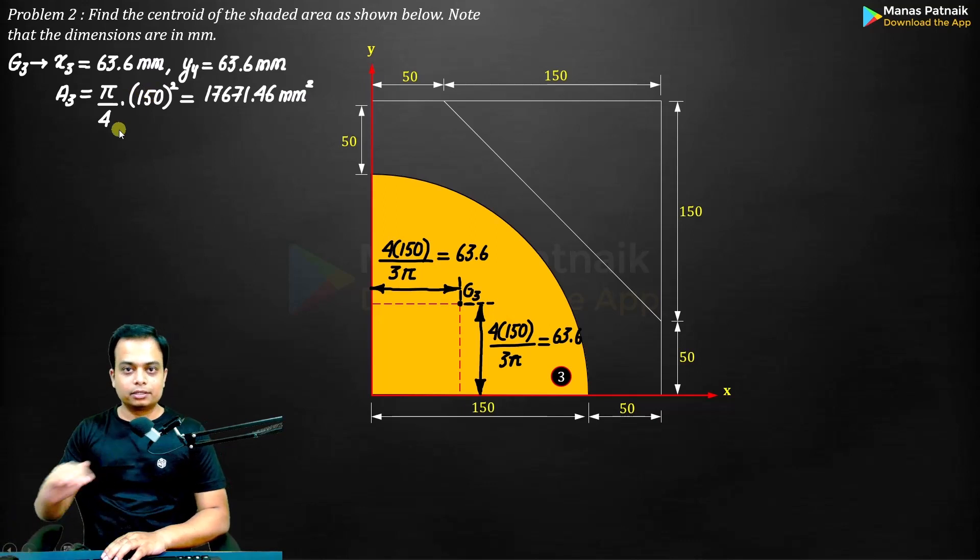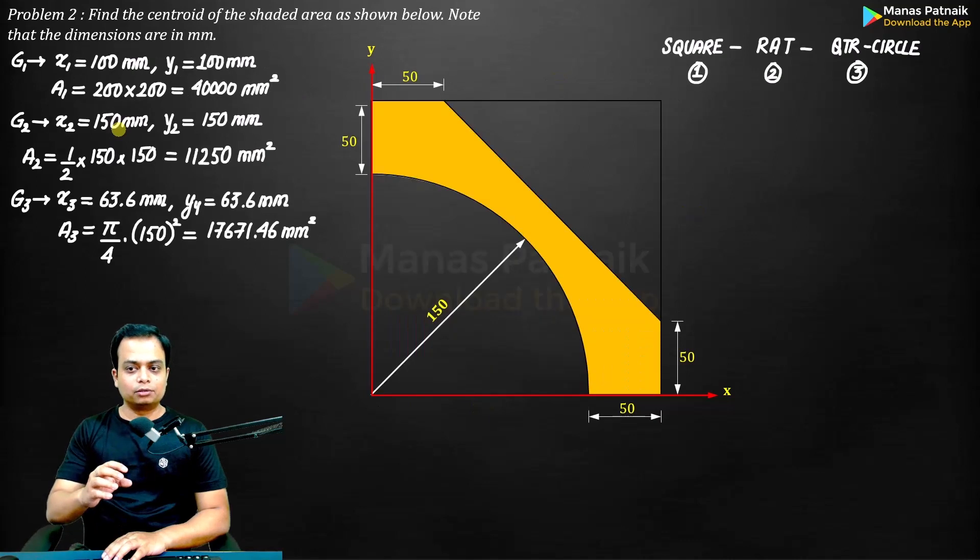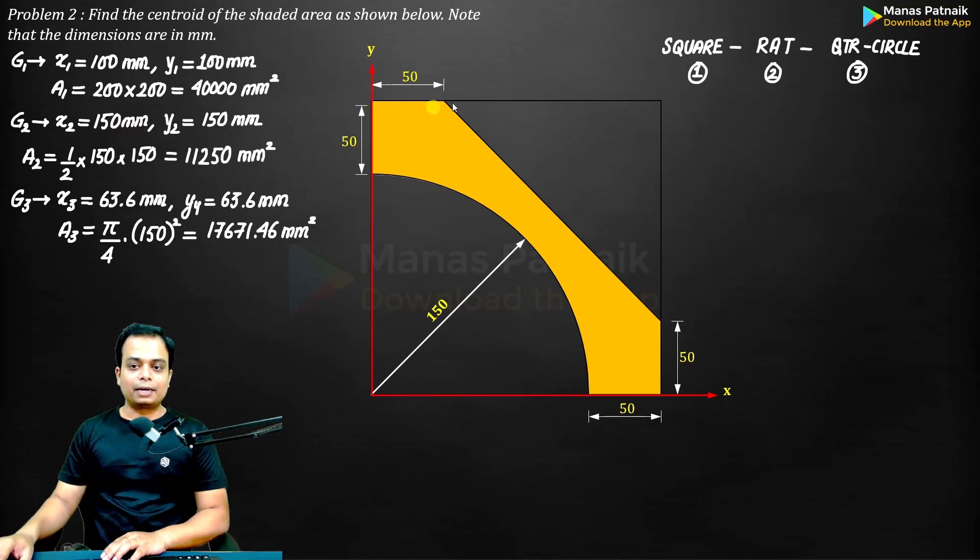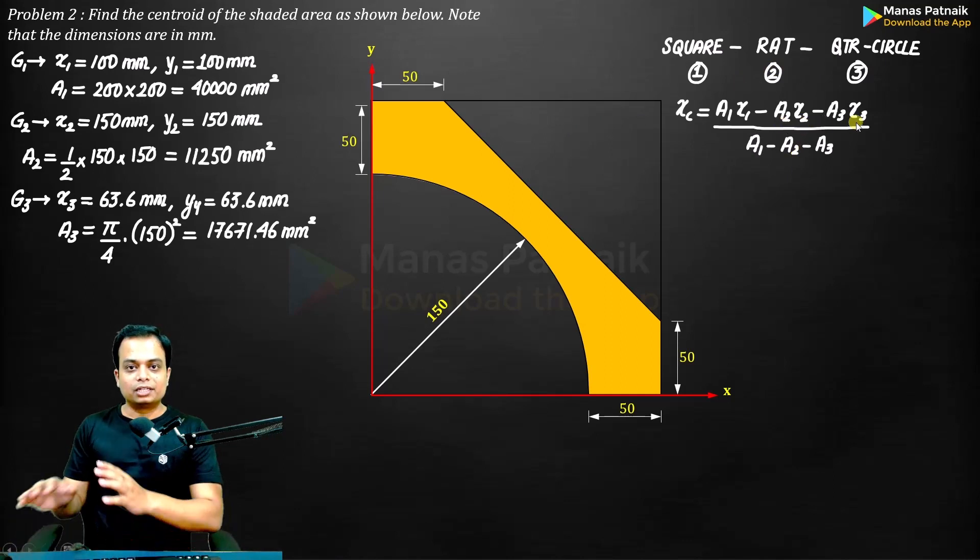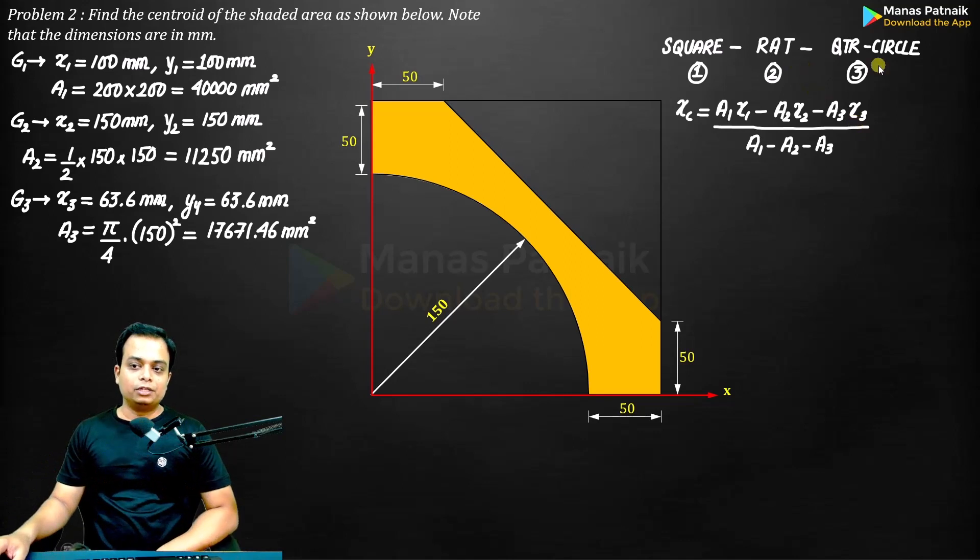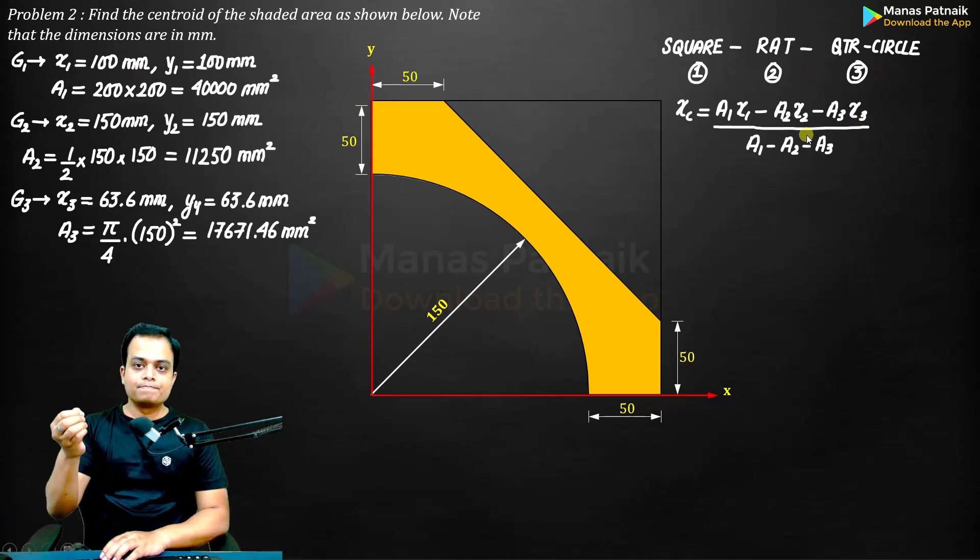So I've got all the values. What I need to do is frame a formula. The formula will be tweaked a little. How? Because we need to subtract a right angle triangle and a quarter circle marked by 2 and 3. This is what you need to do: minus a₂x₂ minus a₃x₃. We are subtracting these two from the square, so modify the formula accordingly.